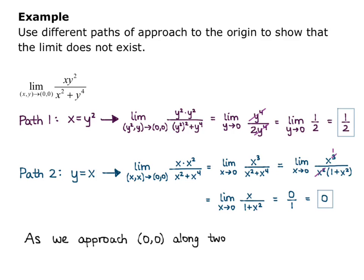So what this tells us is that as we approach (0,0) along two different paths, the function approaches two different z values.